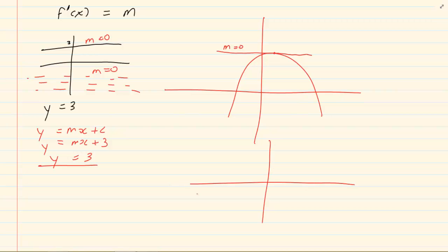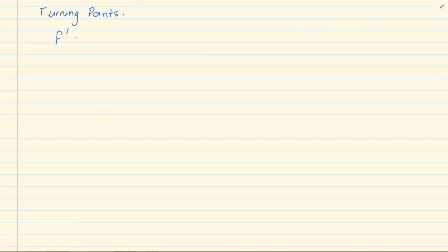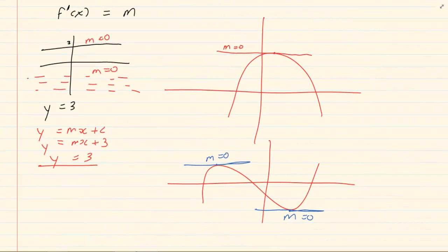If I give you any other graph, if I were to draw a tangent there and a tangent there, my gradients would be perfect zeros. Now, why is this important in drawing calculus graphs? In order to draw a calculus graph, you need to get the turning points. To get the turning points, we use the method where we calculate f prime of x, which means we get m. But we know that the gradient at a turning point is 0.